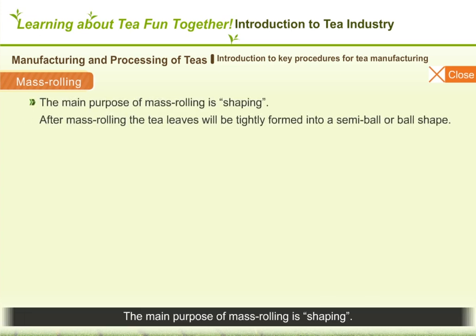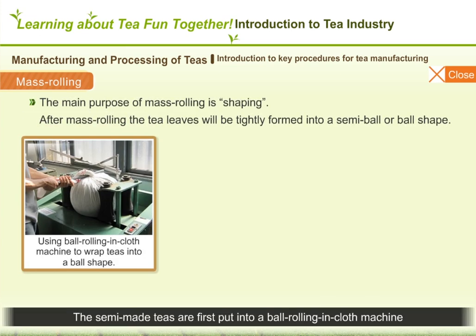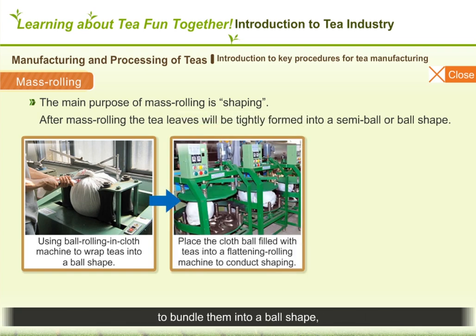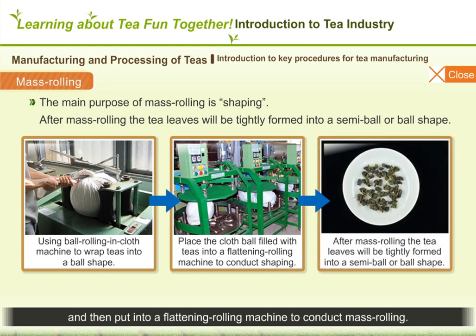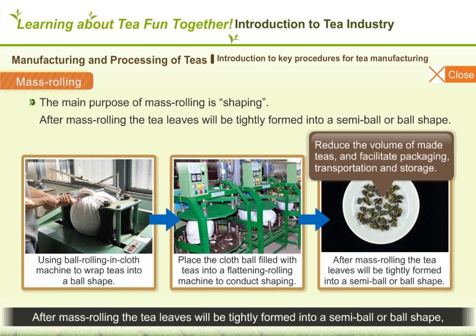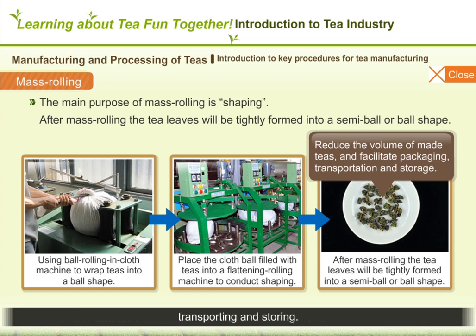The main purpose of mass rolling is shaping. The semi-made teas are first put into a ball rolling and cloth machine to bundle them into a ball shape, and then put into a flattening rolling machine to conduct mass rolling. After mass rolling, the tea leaves will be tightly formed into a semi-ball or ball shape, which reduces the volume of made teas to facilitate packaging, transporting, and storing.